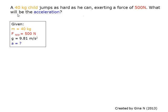According to the question, we know that the mass is 40 kg, the applied force, which is the exerted force, is 500 N, and the acceleration due to gravity is 9.81 m per second squared. The question asks to find the acceleration of a child.